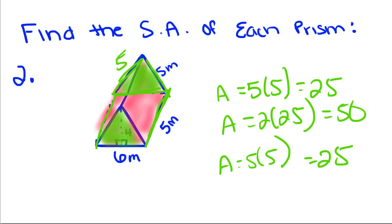And now we need the area of these two triangles right here. So they drew in this height for us and told us that it was 4 millimeters. So to find the area of this triangle, we're going to take one-half base times height. One-half of 4 is 2, 2 times 6 is 12. We're going to multiply that by 2 because we have two triangular faces, so times 2 equals 24.